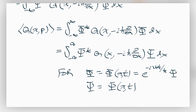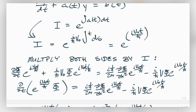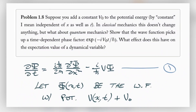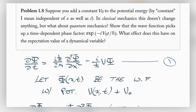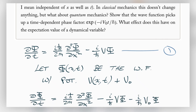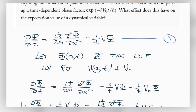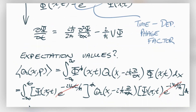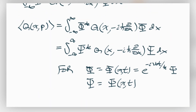In summary, we've shown that adding the constant V₀, independent of x and t, causes the wave function to pick up the time-dependent phase factor e to the negative iV₀t over h-bar. We've also shown that there is no change in the expectation value of any dynamic variable when we do this.